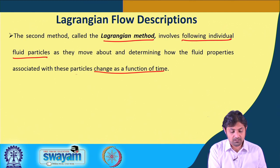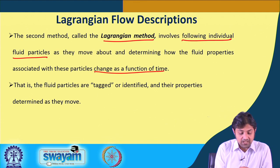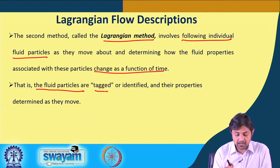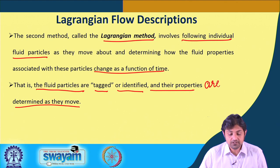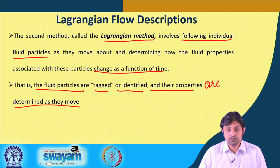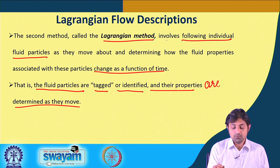Whatever motion we observe is relative to that particular particle, and this flow description is called the Lagrangian method. The fluid particles are tagged or identified and their properties are determined as they move. To summarize: Eulerian is a description taken from a fixed point in space, while in Lagrangian flow description, the frame of reference is fixed to a moving particle.